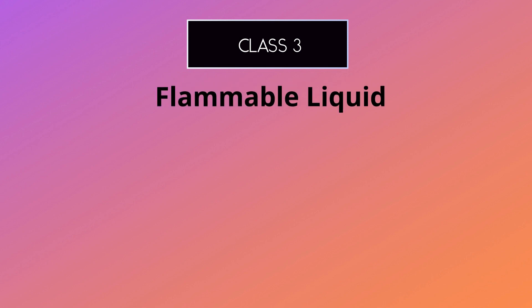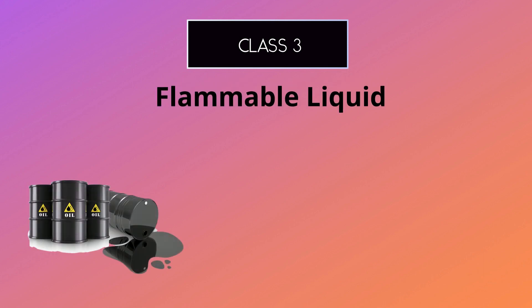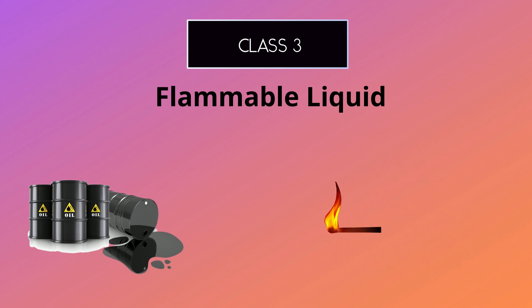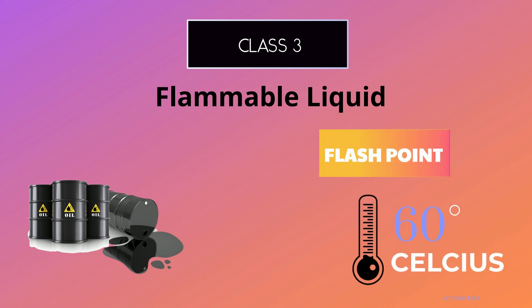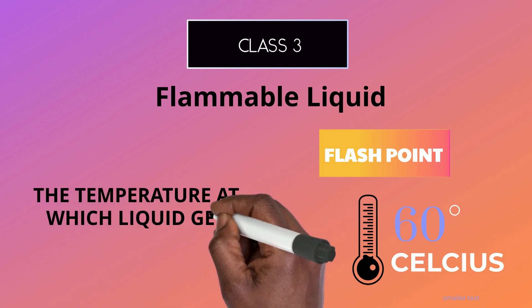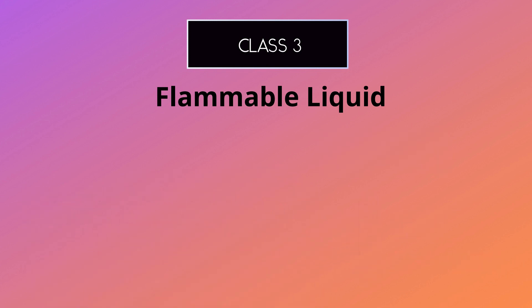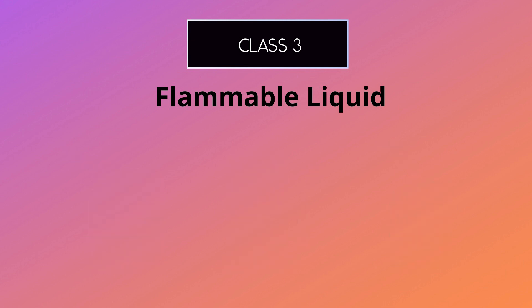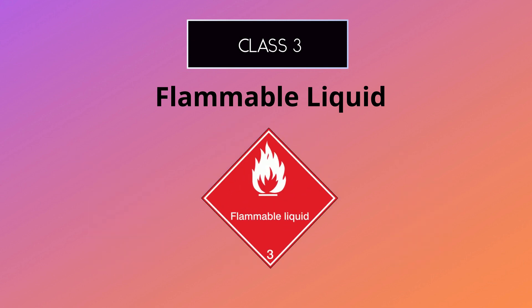The third class of dangerous goods is flammable liquids. This class includes materials that are liquid at normal conditions of temperature and pressure and that can ignite easily. This includes any liquid that has a flashpoint of less than 60 degrees Celsius. The flashpoint is the temperature at which a liquid can ignite — such as gasoline, diesel fuel, and ethanol. The symbol for flammable liquids is a flame over a circle with number three.